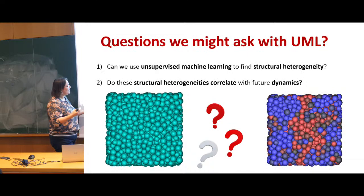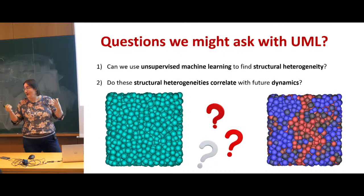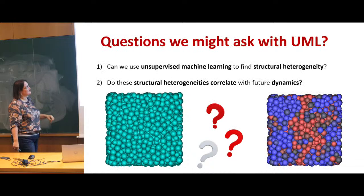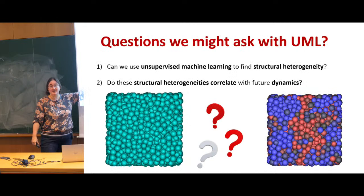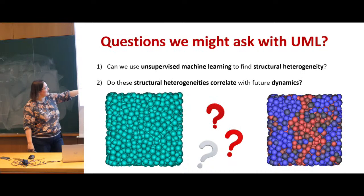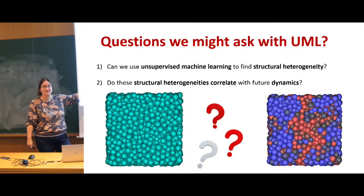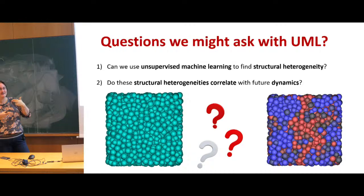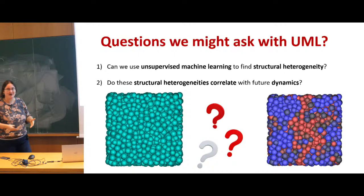My talk is going to go through the main most important aspects of unsupervised learning and then supervised learning, with applications that I hope give you a little bit of an idea of why these things might be very powerful. We'll start with unsupervised. The questions we might want to address — here we have a binary mixture of hard spheres in a supercooled state — we could ask: are there structural heterogeneities, and can we develop an algorithm able to identify structural heterogeneities? This question has nothing to do with the dynamics as a starting point.